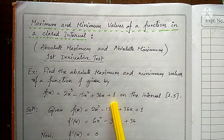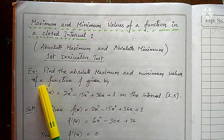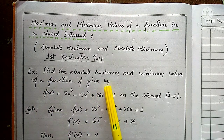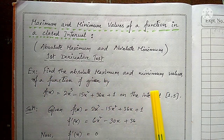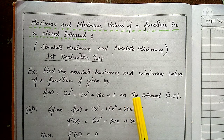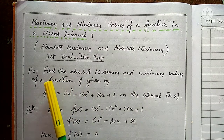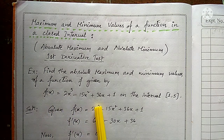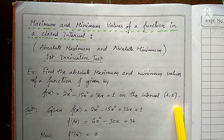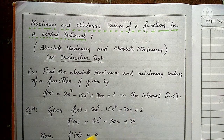Sometimes questions are asked as 'find the greatest maximum,' 'find the global maximum,' or simply 'find the maximum and minimum values.' Don't confuse these — if the question gives a function with a closed interval, we apply the first derivative test to find the absolute maximum and absolute minimum.